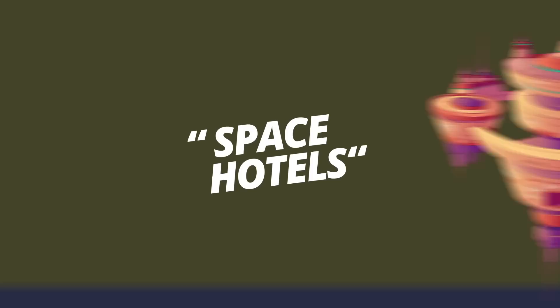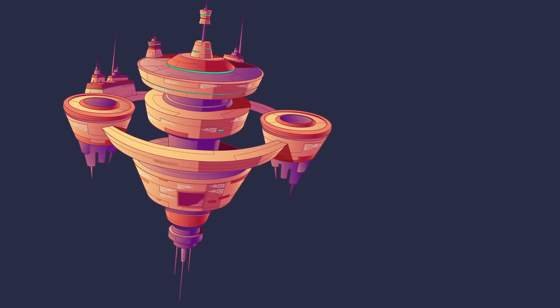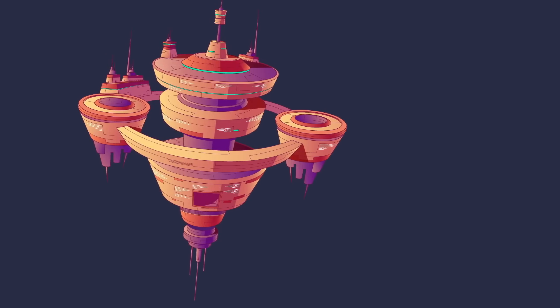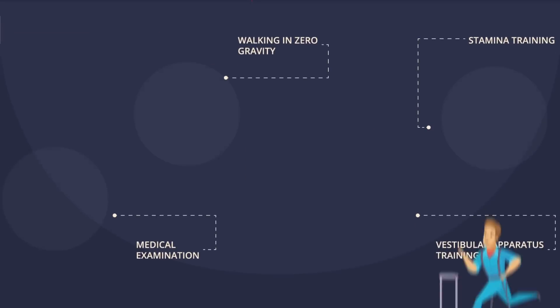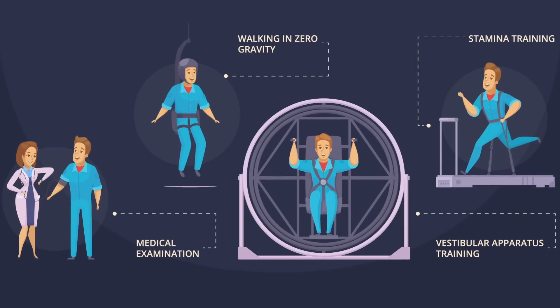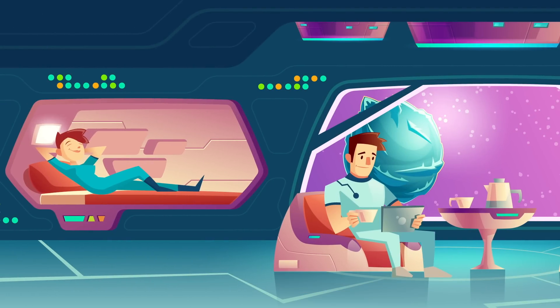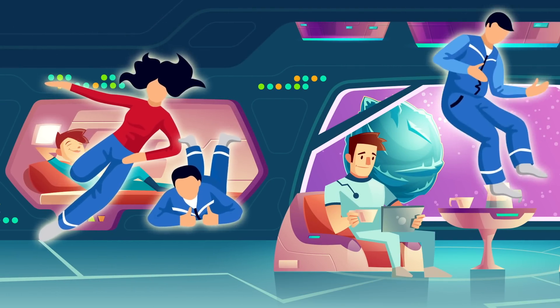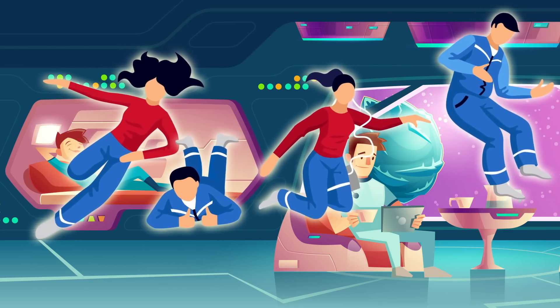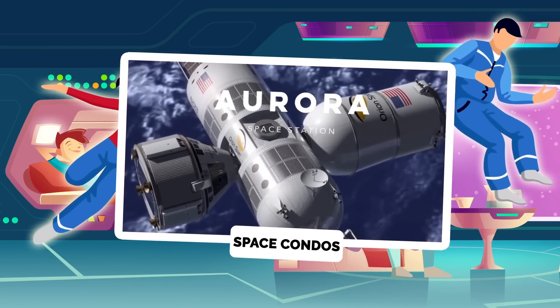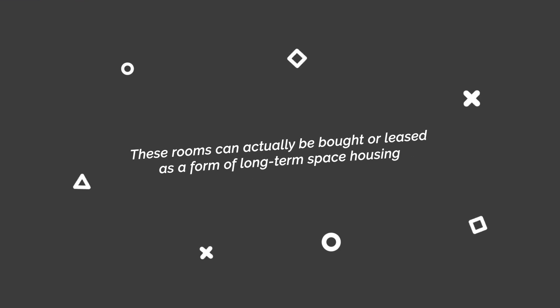Space Hotels. In 2021, a company called Orion Span will launch its Aurora space station. It's the first-ever space hotel. This hotel will provide its guests with the full astronaut experience. After three months of training, you'll get to spend 12 days floating 200 miles above the Earth's surface. The first station will house up to six people, four guests, and two crew members. Of course, it won't always be that way. Orion Span claims their station will grow significantly by adding modules called space condos. These rooms can actually be bought or leased as a form of long-term space housing.